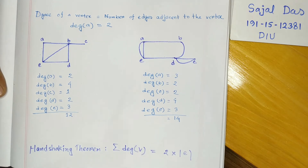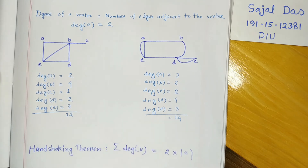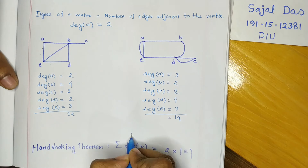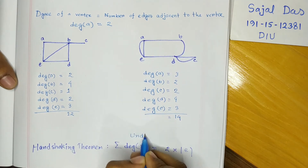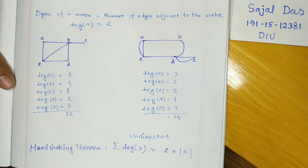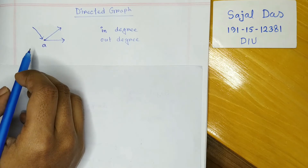Here comes the theorem: the handshaking theorem states that the summation of the total degree of all vertices equals 2 times the number of edges. This applies to undirected graphs.